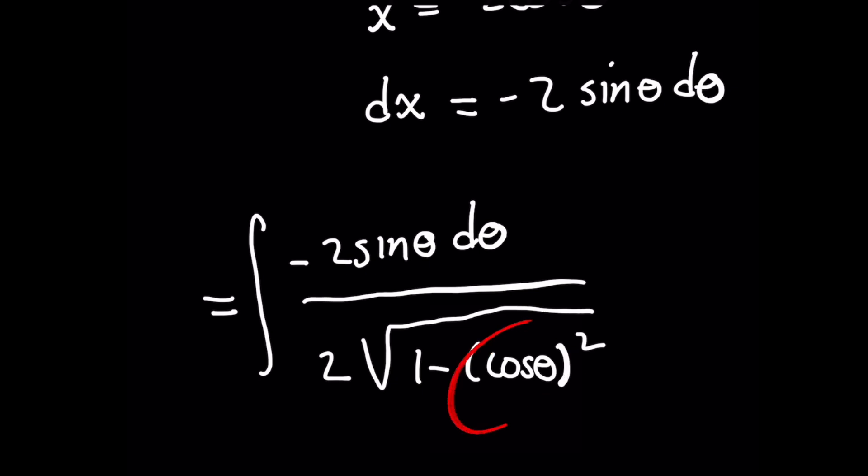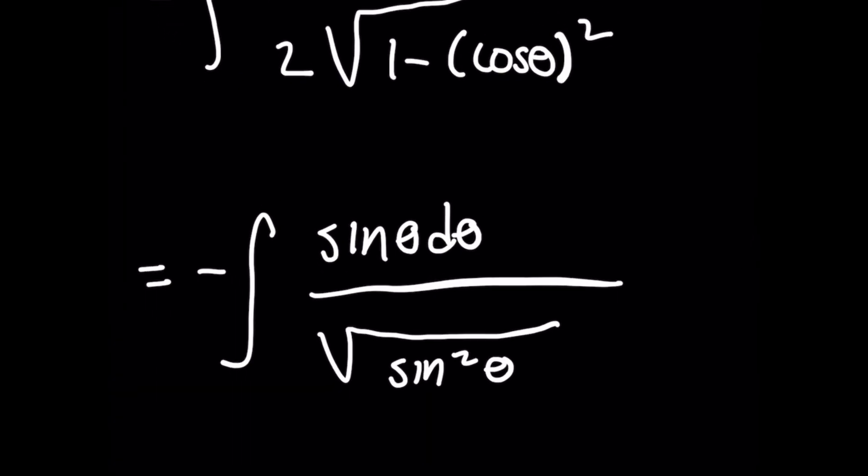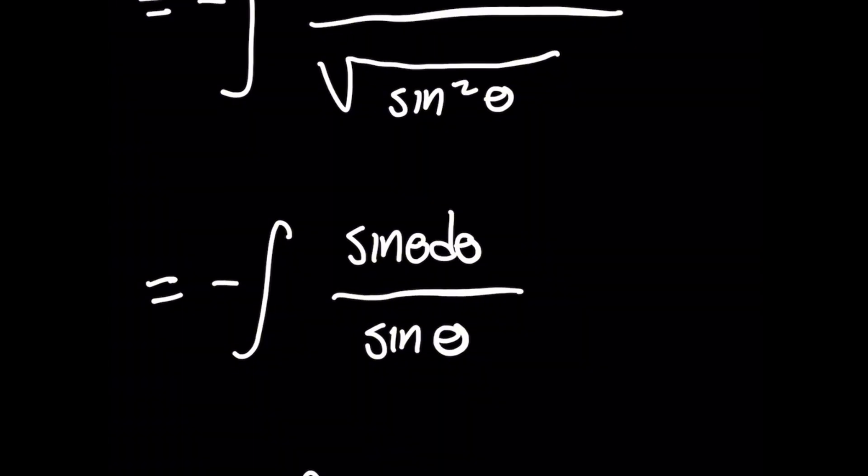we know that 1 - cos²θ is the same as sin²θ. This is really convenient because now when you take the square root of sin²θ, the square and the square root cancel in such a way where this is a really easy integral. We're left with -1 times the integral of sin θ dθ all over sin θ, simplifying